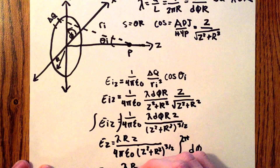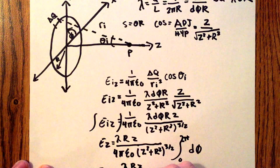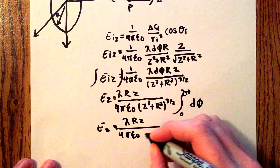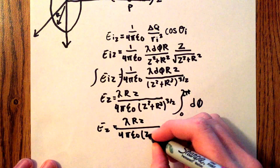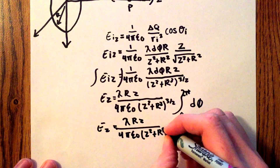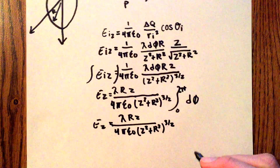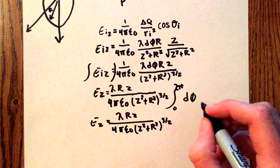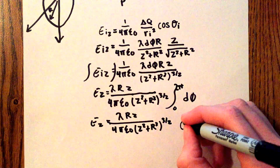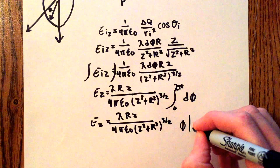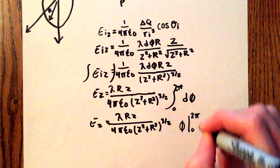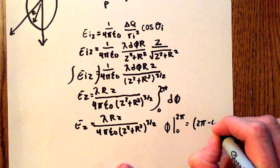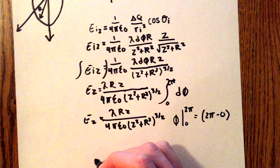Continuing on, we have E_z equal to lambda r z over 4 pi epsilon naught times z squared plus r squared to the three-halves. The integral of d_phi is just phi, evaluated from 0 to 2 pi, which equals 2 pi minus 0.